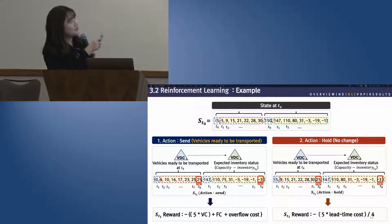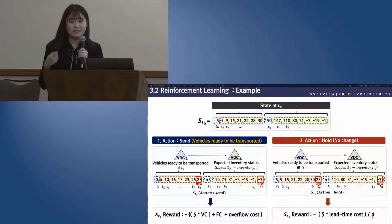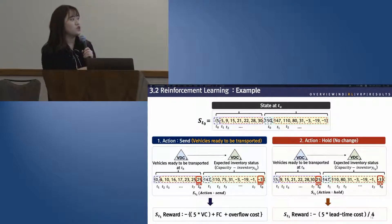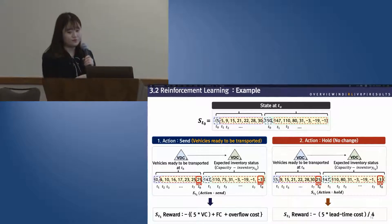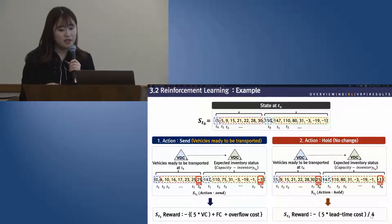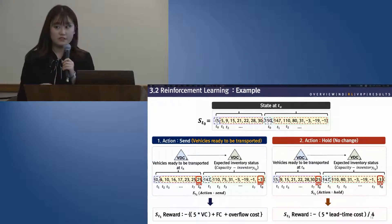If state time zero is defined as shown, we can take two actions. The first action is sending five vehicles to the next VDC at time zero, and the second is to hold. The reward for each action is calculated accordingly. Finally, the RL engine selects a series of actions which gives the best total sum of reward over the planning horizon.